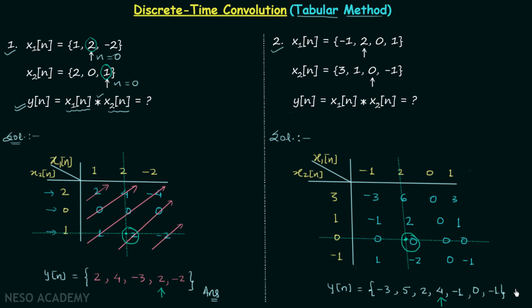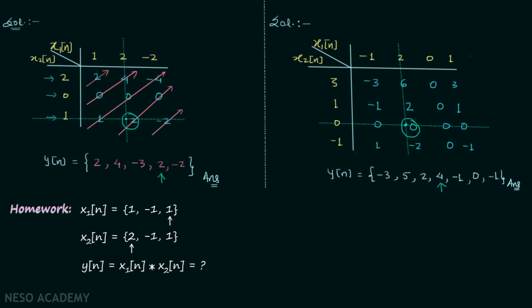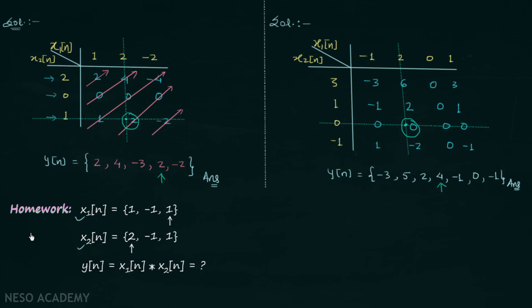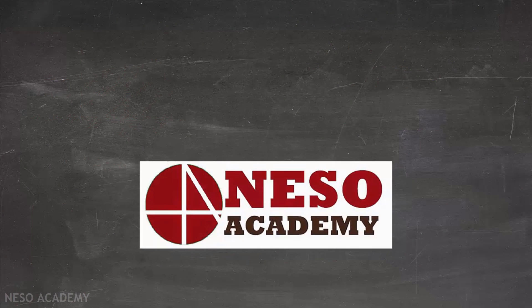After obtaining this answer we will move on to the homework problem. Two signals are given and you need to find yn, which is the convolution of x1n and x2n. Solve the homework problem and once you have your answer, post it in the comment section. Thank you.